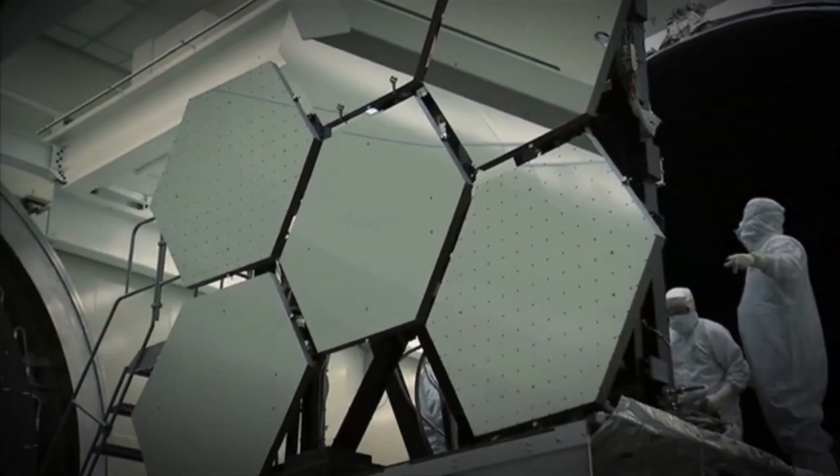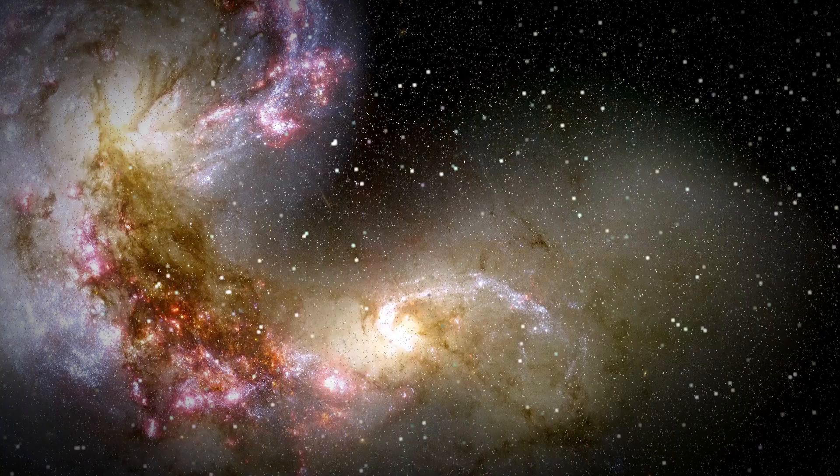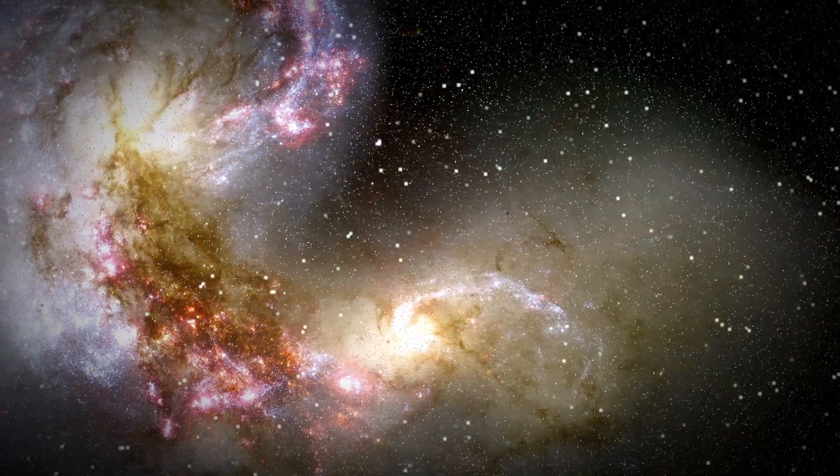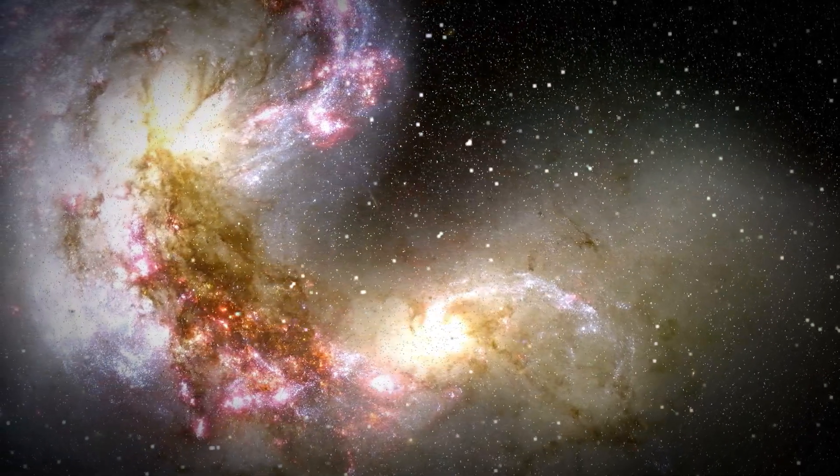The James Webb Telescope has recently achieved an astronomical milestone by capturing the most detailed image of Proxima b, an exoplanet located in our galactic backyard. This breakthrough has illuminated incredible features of this world, suggesting its potential to support life.